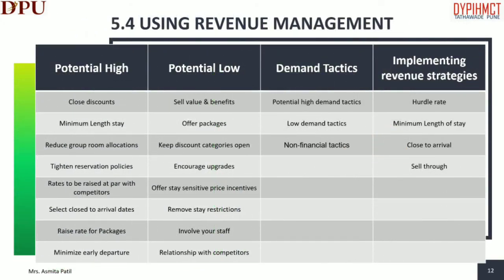FOTEL needs to determine revenue management strategies for both high and low demand periods. During times of high demand, the normal technique is to increase room revenue by maximizing average room rate. Transient and group business market segments may each require a unique and specific strategy. In case of high demand tactics, close or restrict discounts. Analyze discounts and restrict them as necessary to maximize the average rate. You may offer discounts for longer stays or restrict bookings to shorter stays.